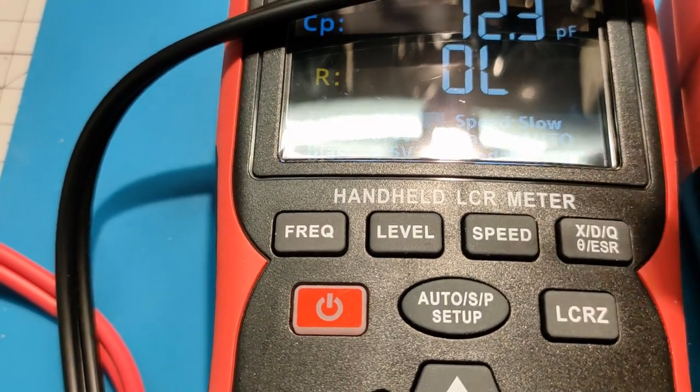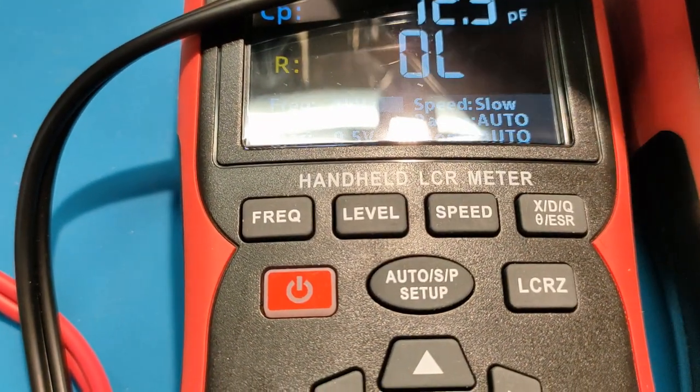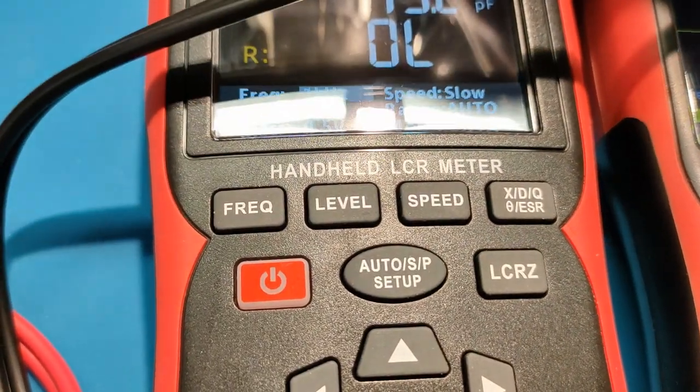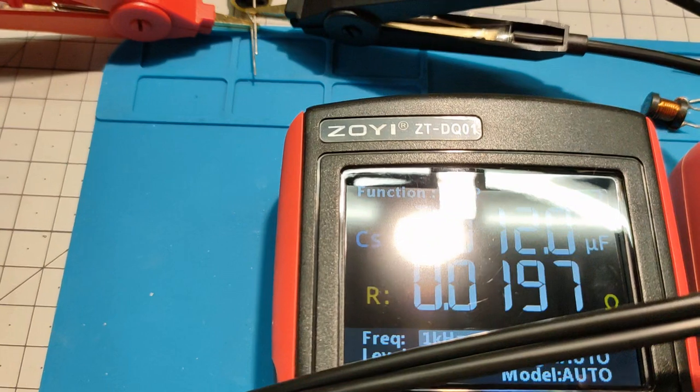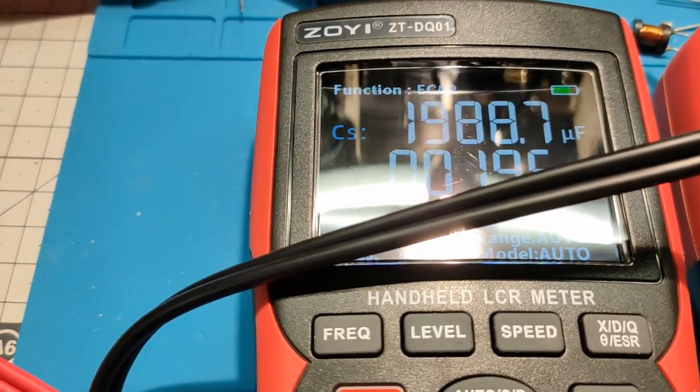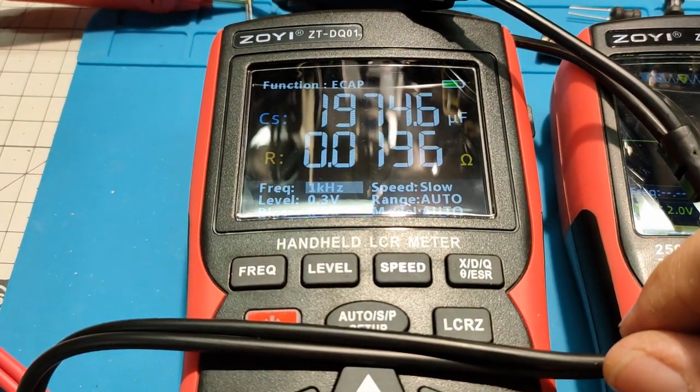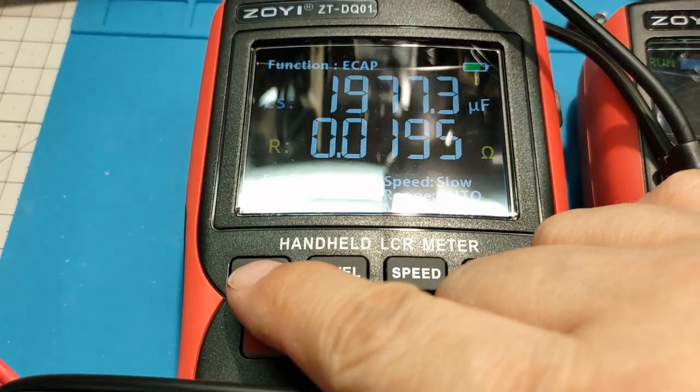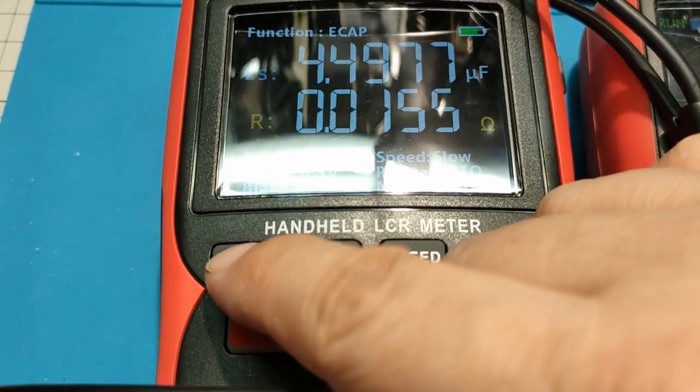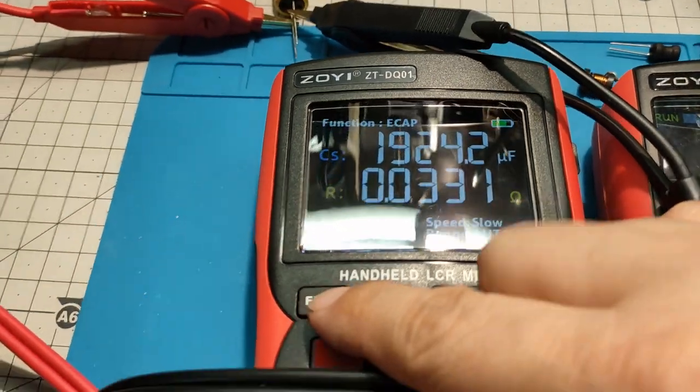So let's maybe try some other one. Let's take something bigger. 1800 microfarad. And let's try to measure it. Slightly over, but I think that's fine. That's a realistic result. Let's try different frequencies. It's 10 kHz, 100 kHz, and again back to 100 Hz. Sorry for the light.